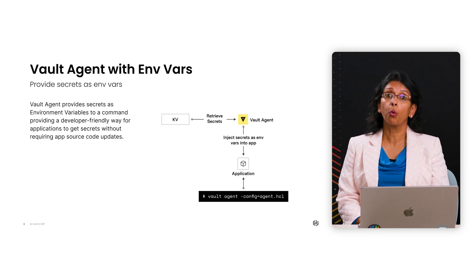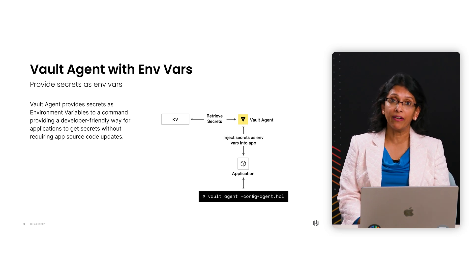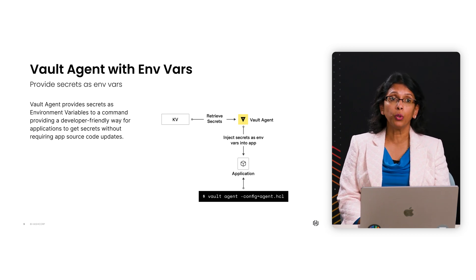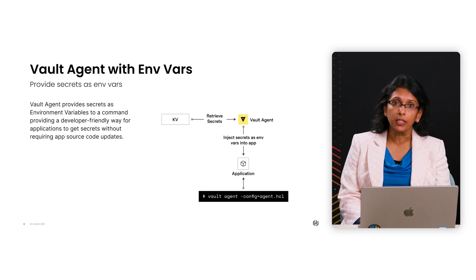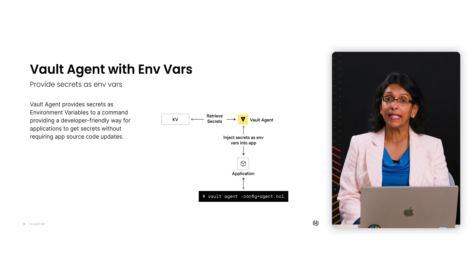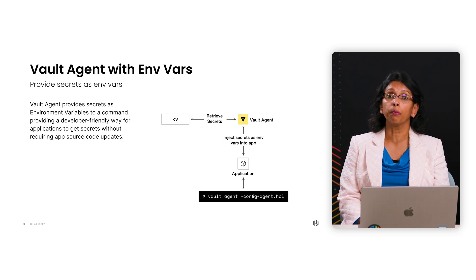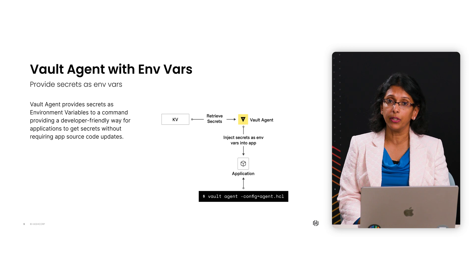Prior to 1.14, with the Vault agent you would have to store secrets manually to a file. In release 1.14, we've added support for the Vault agent to provide secrets as environment variables to a command, which simplifies the workflow for developers significantly. We've been hearing for quite some time the need for more developer-friendly ways to provide secrets with the Vault agent. Previously, developers had to use the console template or end console to help integrate Vault with their existing solutions.